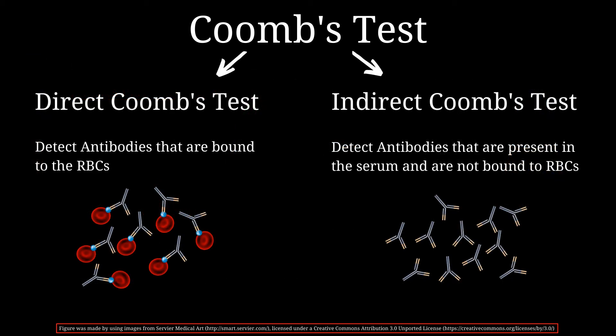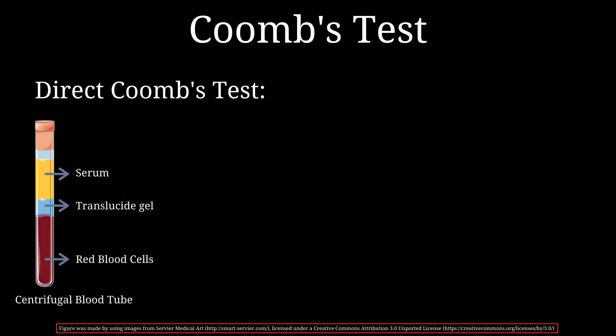Coombs test can either be a direct Coombs test or an indirect Coombs test. Direct Coombs test detects antibodies that are bound to red blood cells, whereas indirect Coombs test detects antibodies that are present in the serum and are not bound to red blood cells.